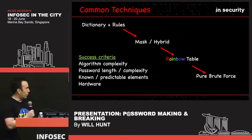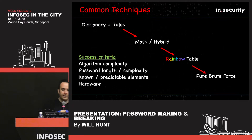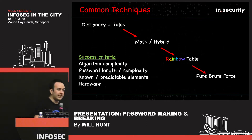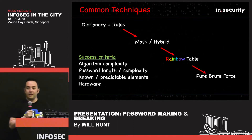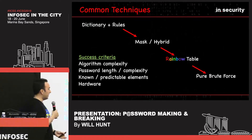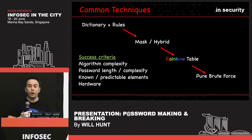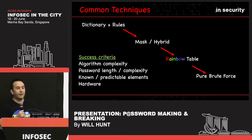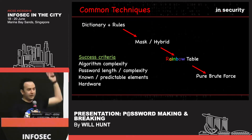Regardless of the technique you employ, success depends on a number of things. First, algorithm complexity: attacking a Windows NTLM hash is substantially faster than attacking a computationally strong hash like Bcrypt or Scrypt. Second, the length and complexity of the password itself — these two contribute to the overall key space, the possible combinations. Third, any known or predictable elements: if you know a password can only use lowercase letters or numbers, you can reduce your attack's key space. And of course, the hardware — nowadays it's all about GPUs. Stack a load of the latest NVIDIA gaming cards and you can crack hashes very, very quickly.